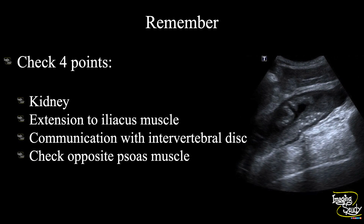The take-home message: when you encounter a psoas abscess, don't forget to check four points. First, evaluate the kidney, as it is situated adjacent — there may be reactionary changes like increased echogenicity or perirenal collection. Second, check for extension to the iliacus muscle, which is not uncommon. Third, if it is due to spondylodiscitis, there should be a communication with the intervertebral disc, which is best visualized on prone position with a linear transducer. Fourth, don't forget to check the opposite psoas muscle to exclude a similar lesion.